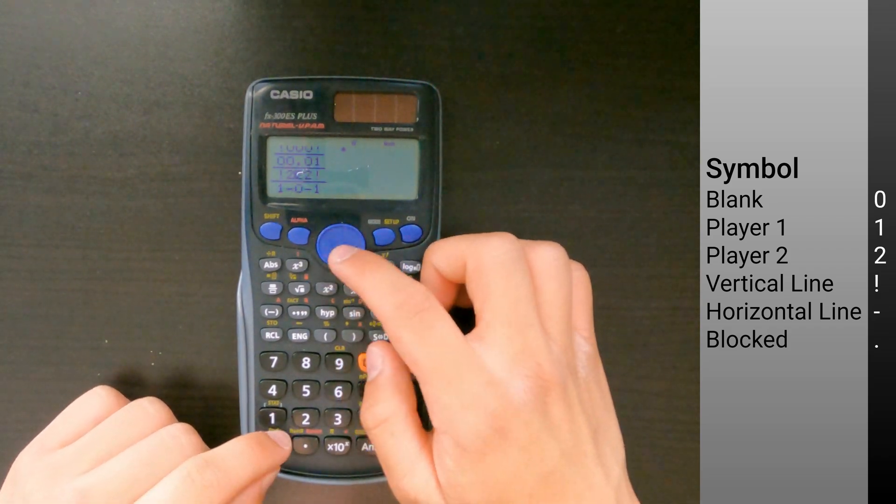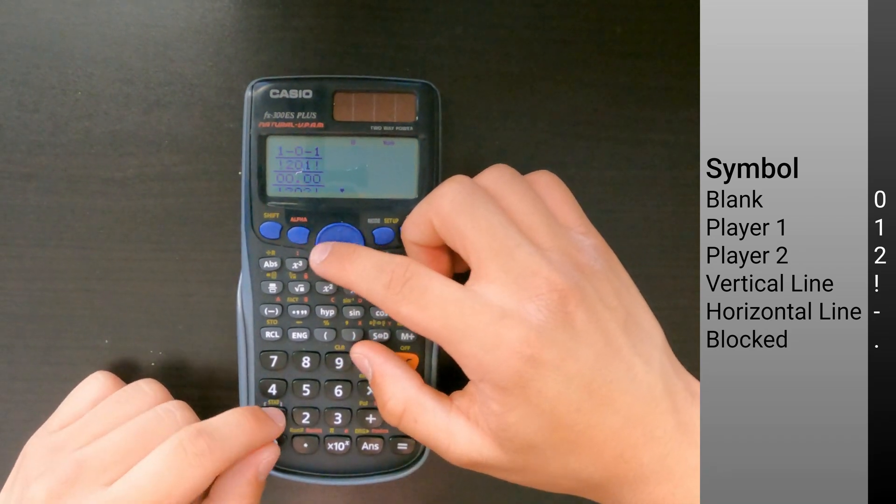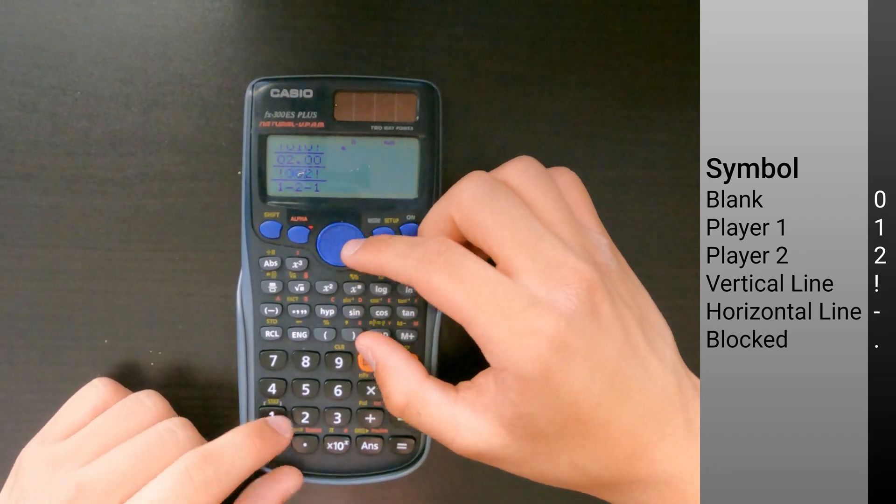If three men form a horizontal or vertical line in either phase, you get to remove an opponent's piece. The goal of the game is to get rid of all your opponent's pieces.